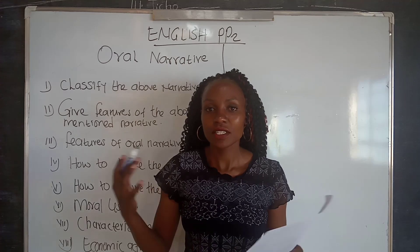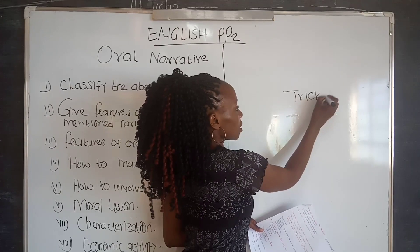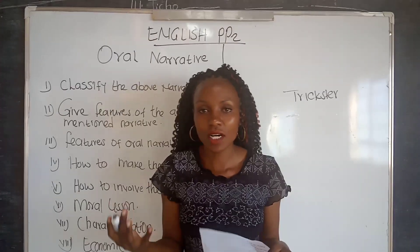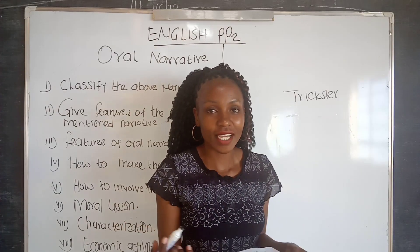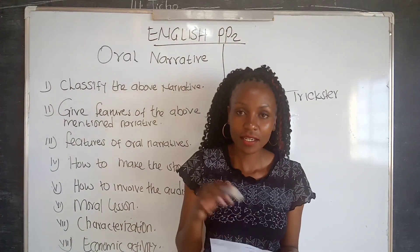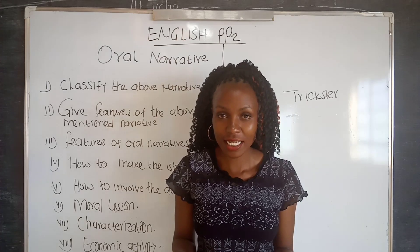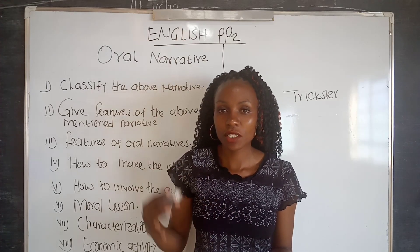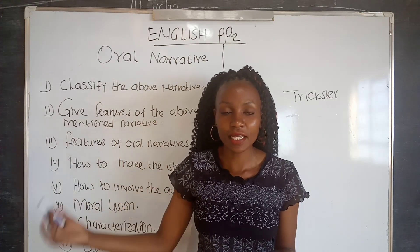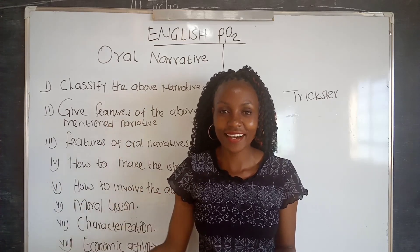We are going to use the trickster narrative as our example. In your answer, you have to write 'trickster narrative' and then give a reason. For example: it is a trickster narrative because the hare tricks the elephant, or the hare tricks the hyena.